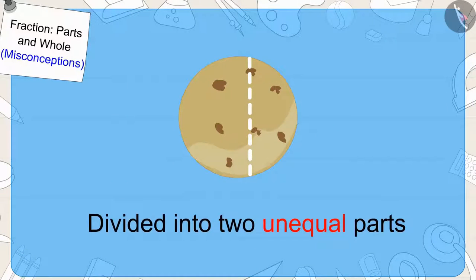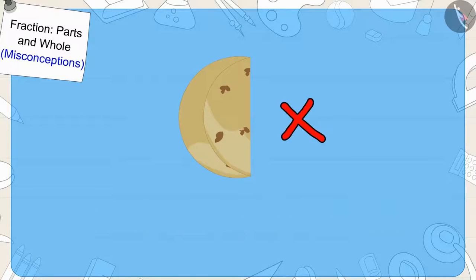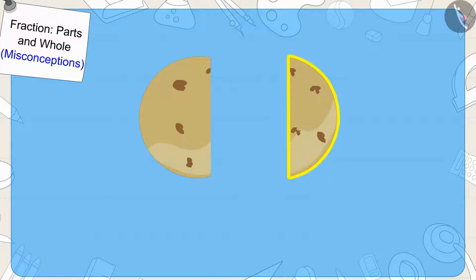Exactly. The fox did not give half part to Babban. The fox did not divide the chapati into two equal parts. So, the portion that Babban got was not half of the chapati.